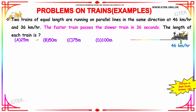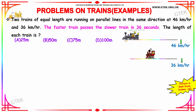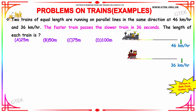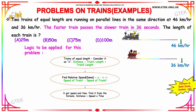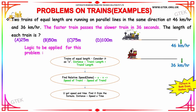Moving on to another train problem: two trains of equal length are running on parallel lines in the same direction at 46 kilometers per hour and 36 kilometers per hour. The faster train passes the slower train in 36 seconds. We need to calculate the length of each train. Since the trains are of equal length, consider each as x, so the total distance is x plus x, which is 2x.